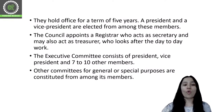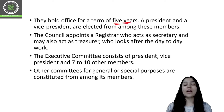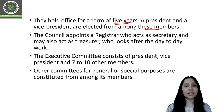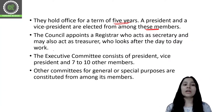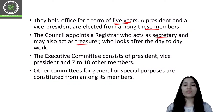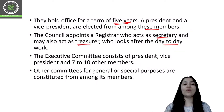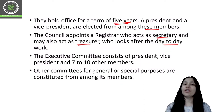All these members hold office for a term of 5 years. A president and a vice president are elected from among themselves — the council members elect who will become president and who will become vice president. The council also appoints a registrar who acts as secretary and may also act as treasurer, looking after day-to-day work.